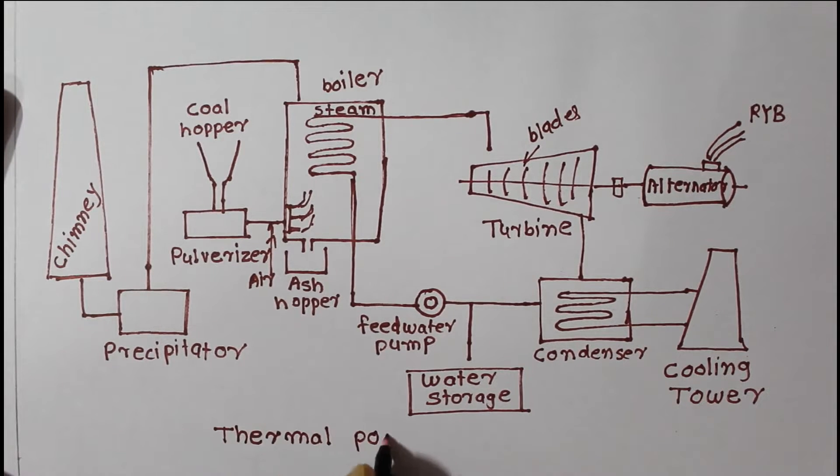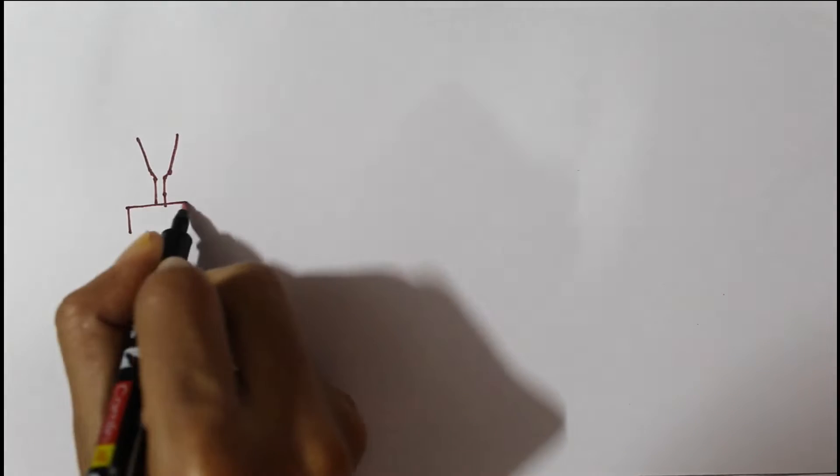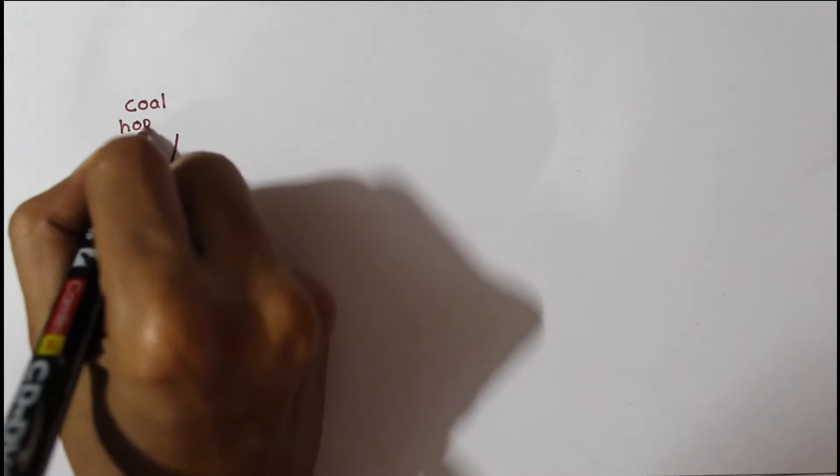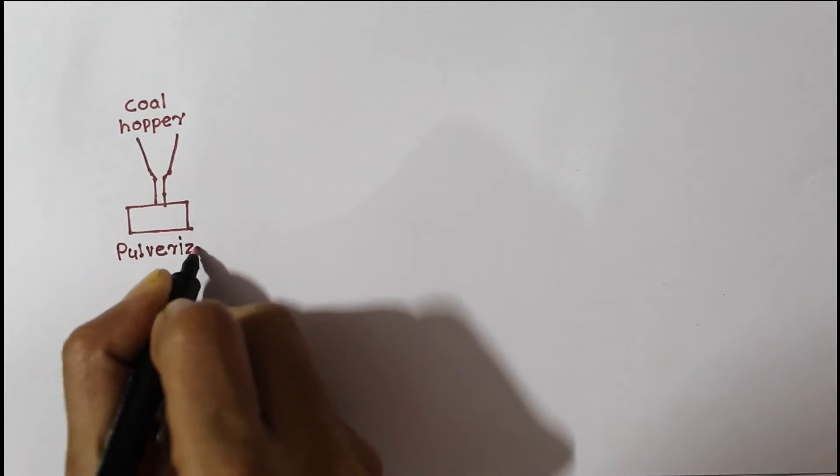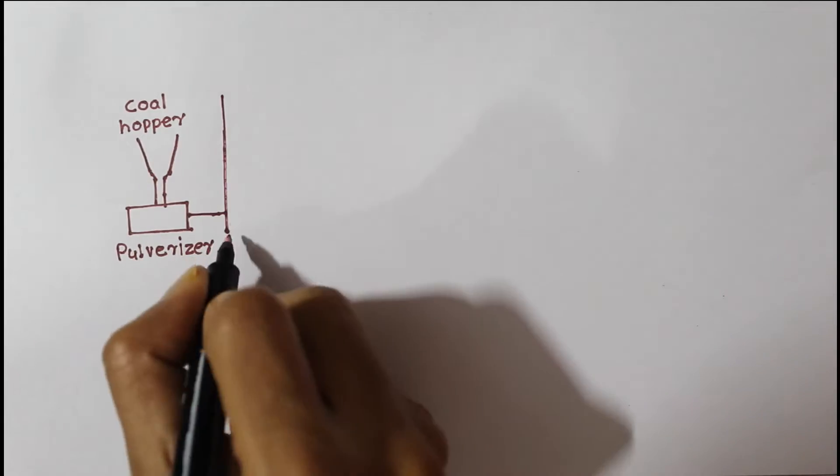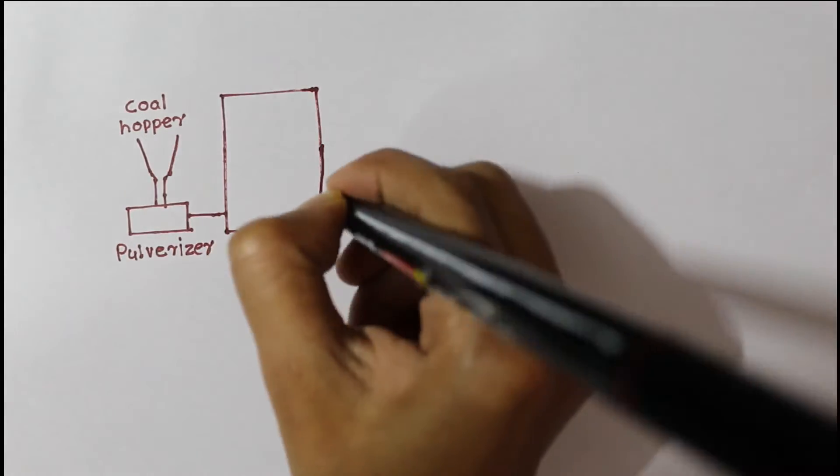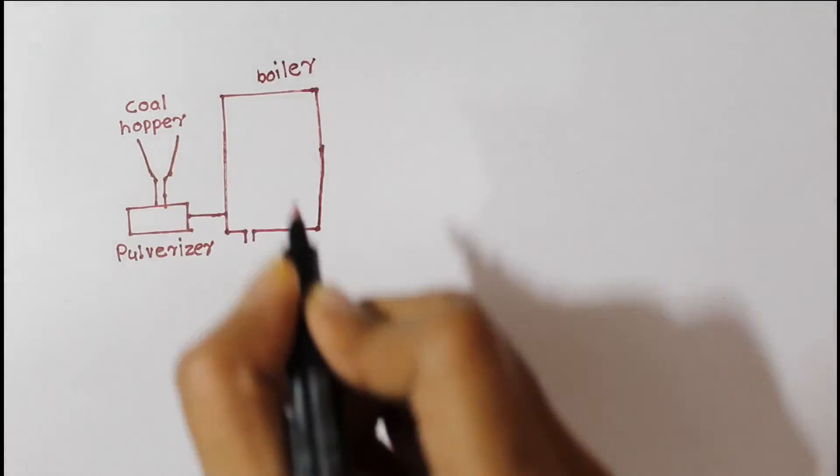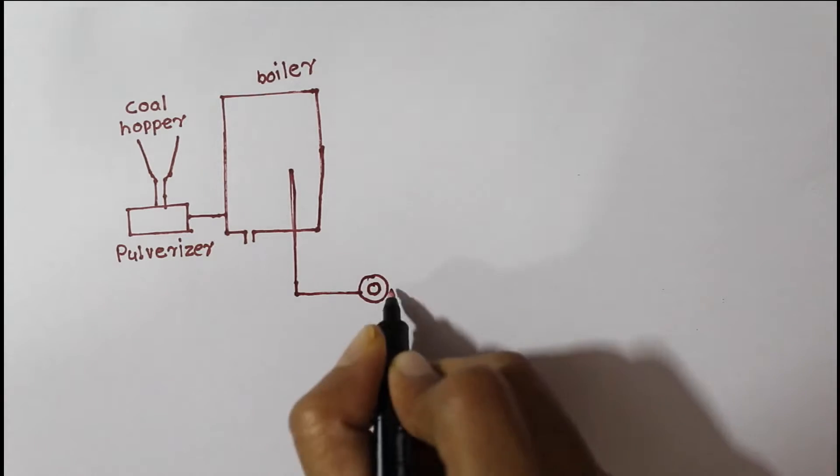Before explaining working, let's see what equipment is required for thermal power plant. First one is coal hopper. Coal is transported from coal mines to the power plants and fed into coal hopper. Next is pulverizer to pulverize coal.